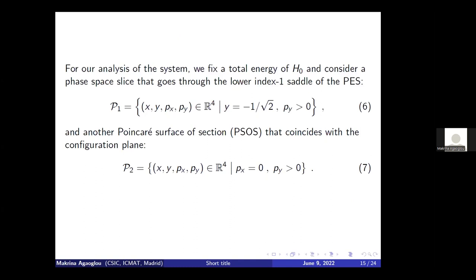If the total energy of the system is between −1/2 and −1/4, the wells are isolated from each other since the energy is below that of the index 1 saddles, and motion starting in one well remains trapped there forever. If the total energy is between −1/4 and 0, the energy is above all index 1 saddles but below the index 2 saddle at the origin. All potential wells are now connected and isomerization can take place through phase space bottlenecks near the index 1 saddles, but the region of the index 2 saddle remains forbidden.